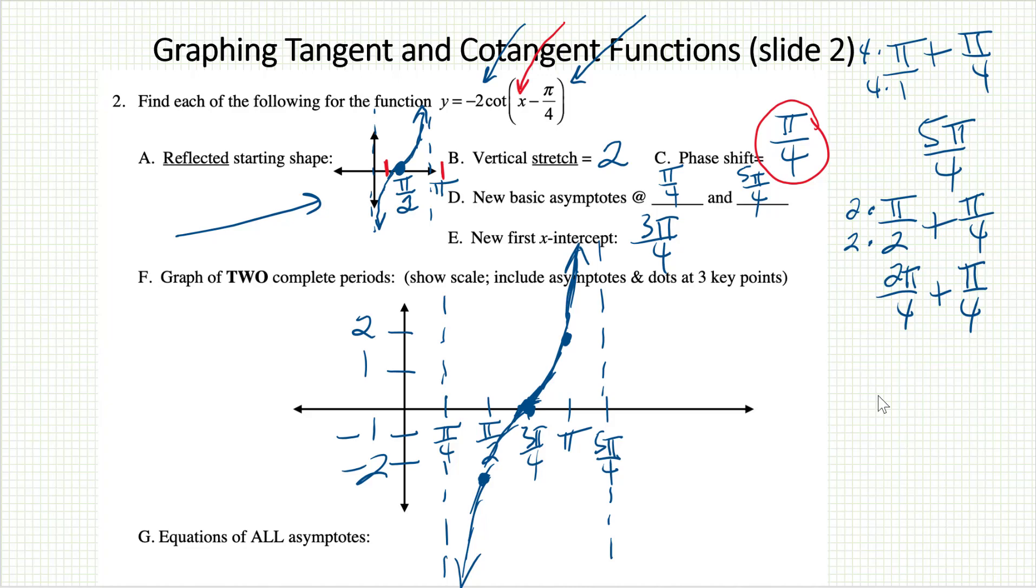We can always add the second one on very quickly. I'll still need to count by pi over 4s. It took me four tick marks before, so it'll be the same thing now. Maybe we'll just mark that last one. We were at 5 pi over 4, so 6, 7, 8, 9 pi over 4 to get to here. I know there's an asymptote there. I know the x-intercept is right in the middle. I know the other two key points. There's going to be one up at 2 and one down at negative 2. And then draw the curve in, and we're done. And so there's two periods of that function shown.